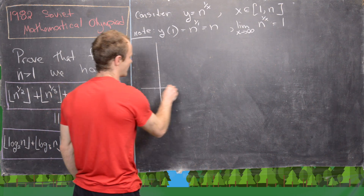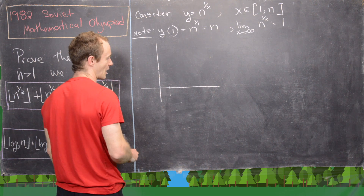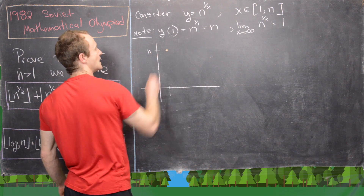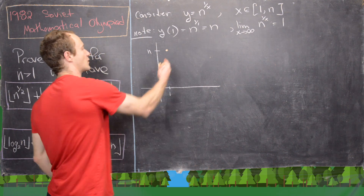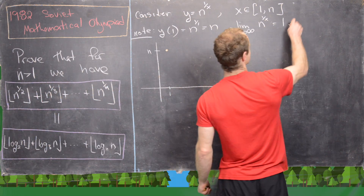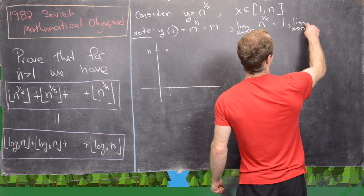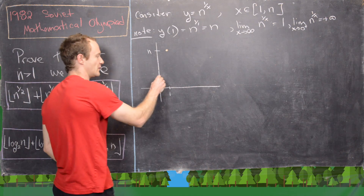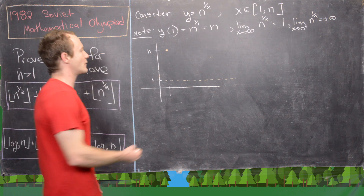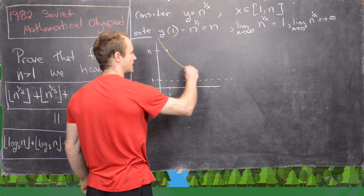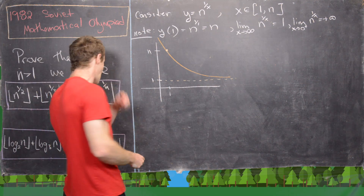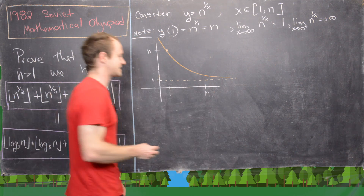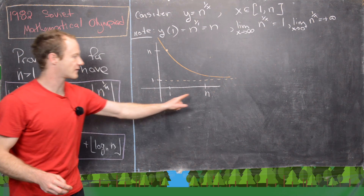Now let's look at the graph of this function. At x = 1, we're at the point (1, n). As x goes to 0 from the right, n^(1/x) goes to positive infinity, so we have a vertical asymptote. And we have a horizontal asymptote at y = 1. Putting that together, the graph has a decreasing curve shape from the vertical asymptote down toward the horizontal asymptote. An obvious continuous version of the sum would be the area under this curve from 1 to n.